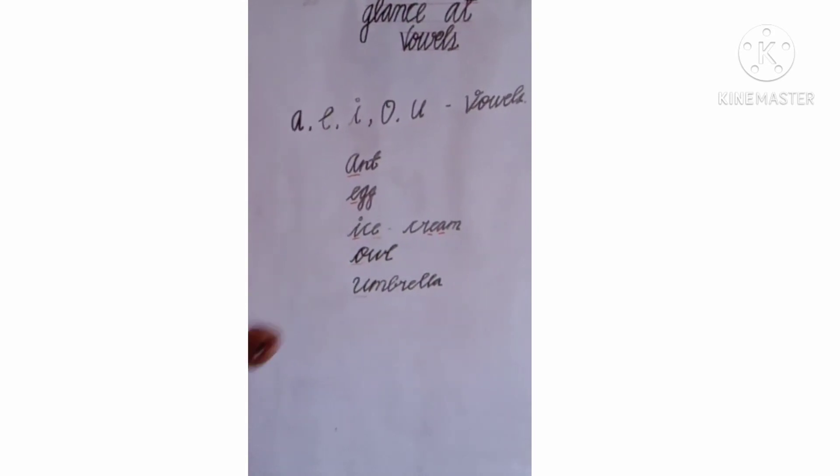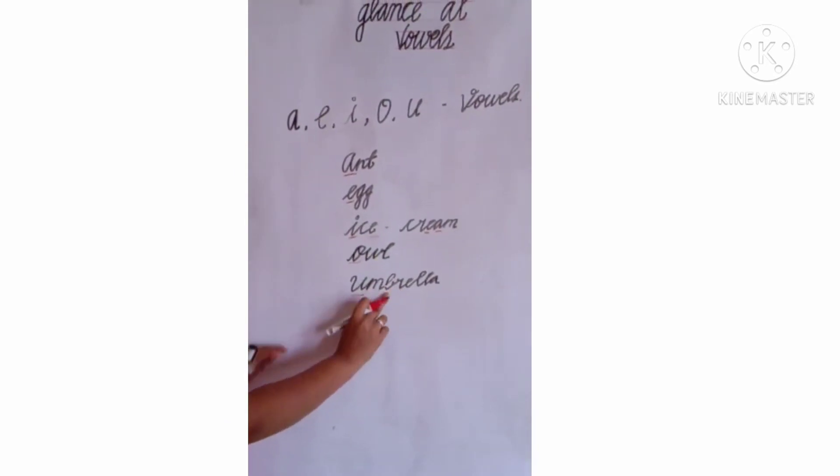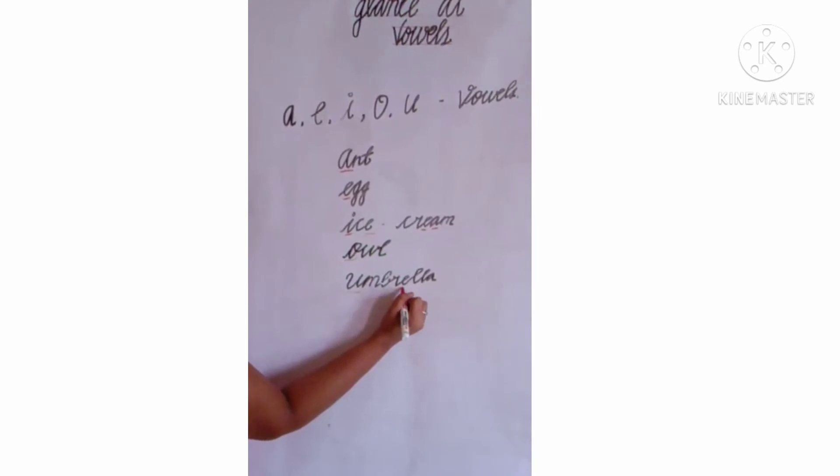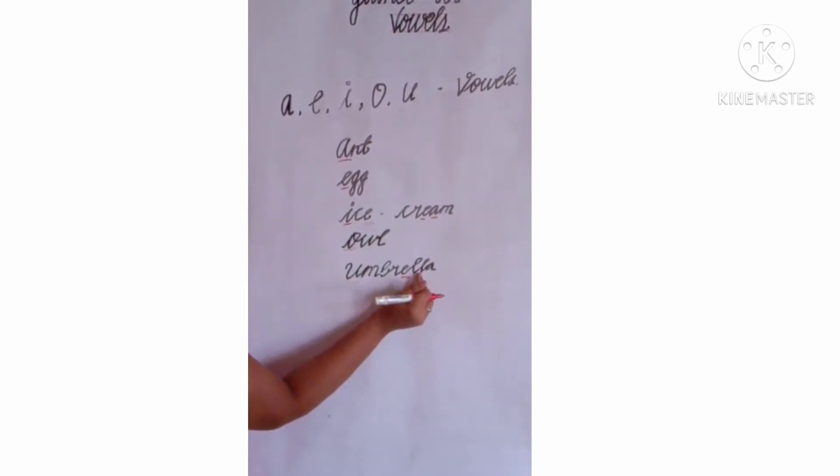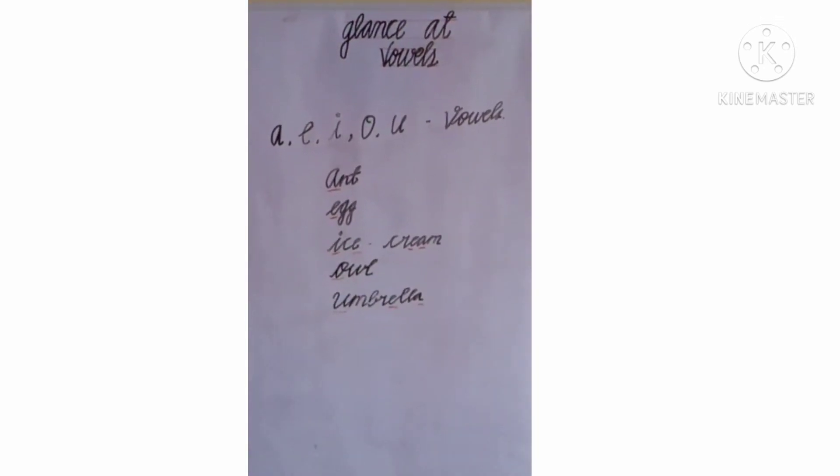And in Umbrella, let's see. M is not a vowel. B is also not a vowel. R is not a vowel. E is a vowel letter. Double L, it is not a vowel. A, it is a vowel. Okay.